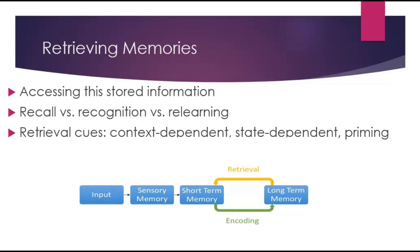Context-dependent memory is remembering information within the same environment. State-dependent memory is where retrieval is easier when you're in the same internal state — such as mood or emotions — that matched when you encoded the memory. Happy time, trying to remember in a happy time. Priming is exposure to a stimulus that influences how you respond to a later stimulus, often without conscious awareness — for example, seeing the word 'yellow' may help you recognize the word 'banana' faster.